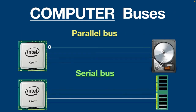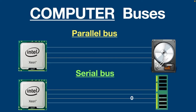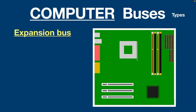Parallel bus versus serial bus — with a parallel bus, data is transmitted several bits at a time. However, with a serial bus, data is transferred one bit at a time.